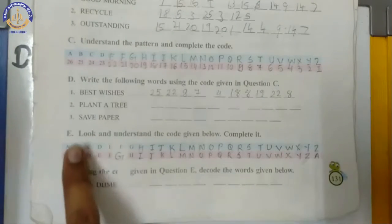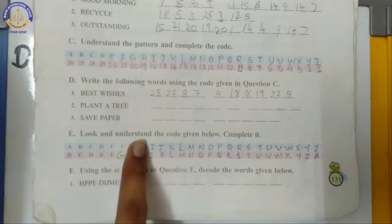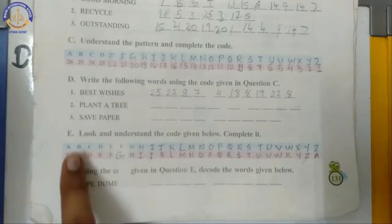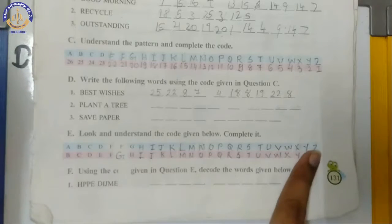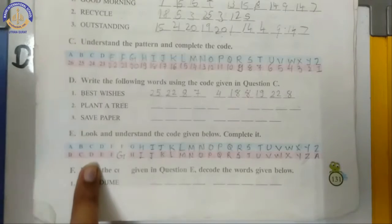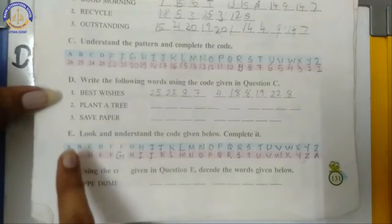Here we have pattern. First of all, look and understand the code given below. Complete it. It means what children? We have to complete the pattern first. In your exam, pattern is given to you. Okay? You have the given pattern, you have to observe and understand. So first of all, what is the pattern?